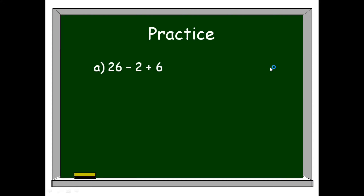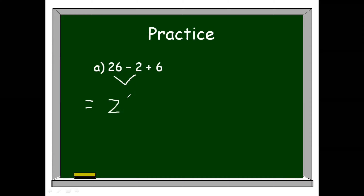First, we're going to verify the operations in our expression. We have only subtraction and addition, therefore we're going to solve this from left to right. Let's solve: first we simplify 26 and 2. 26 minus 2 gives us 24. Don't forget to write the remaining component of your expression, which is plus 6.